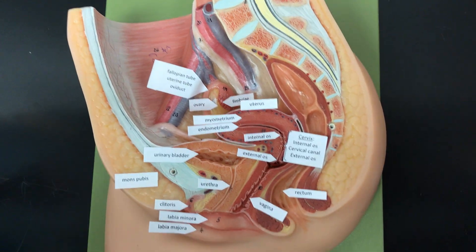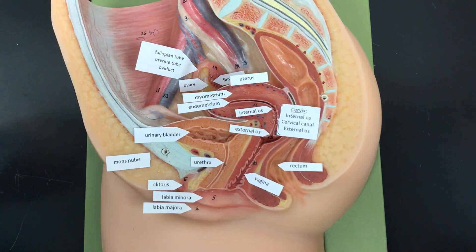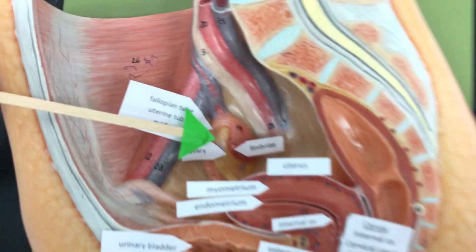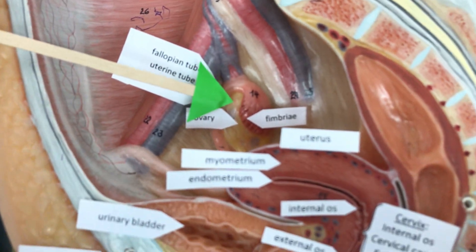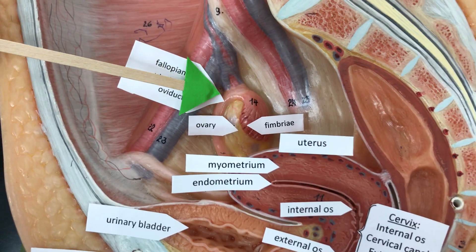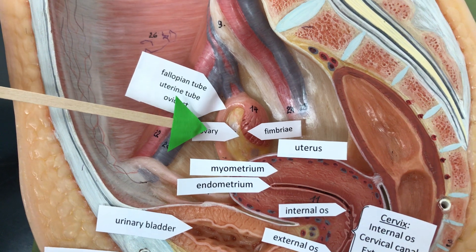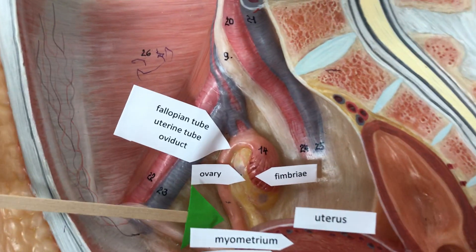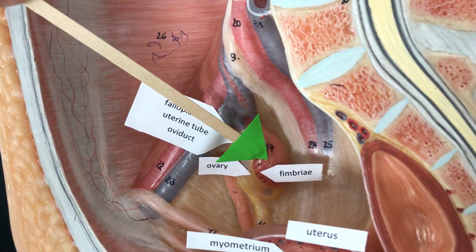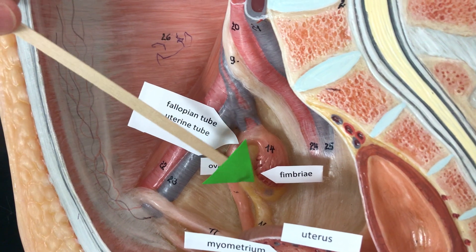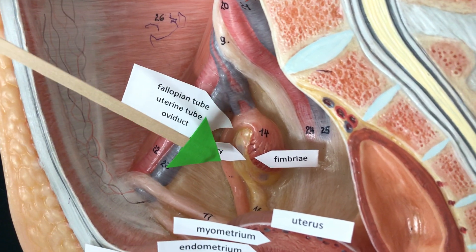This is a tour of the female reproductive model. The ovary is where the eggs are developed and the eggs are released into the fallopian tube, also called the uterine tube, also called the oviduct. These fimbriae right here are finger-like and they coax the egg into the fallopian tube.